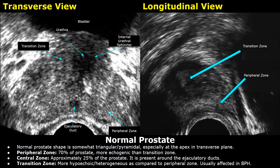On a transrectal view or TRUS image, the prostate is divided into zones. There are three main zones: the peripheral zone constitutes 70% of the prostate, while the central zone makes up approximately 25% and surrounds the ejaculatory ducts. The transition zone is only 5 to 10% of the prostate gland, but this zone is usually affected in BPH.